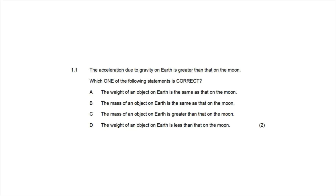Question 1.1 states the acceleration due to gravity on Earth is greater than that on the Moon. The correct answer is option B: the mass of the object on Earth is the same as that on the Moon. The weight force equals mass times gravitational acceleration (9.8 on Earth, less on the Moon), so weight differs, but mass — the amount of matter — remains constant no matter where the object is in the universe.